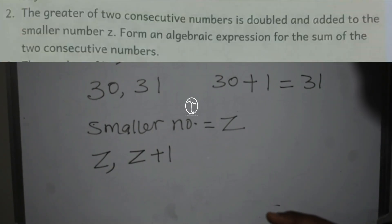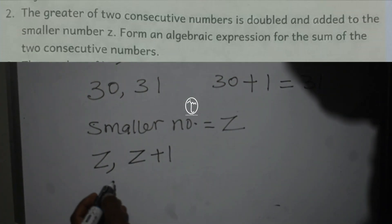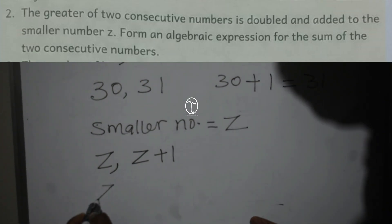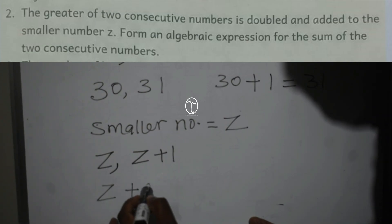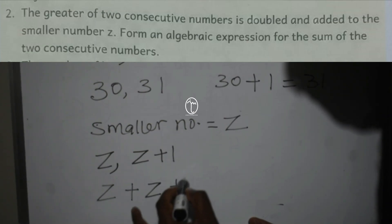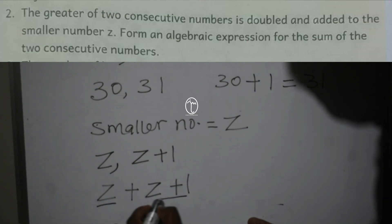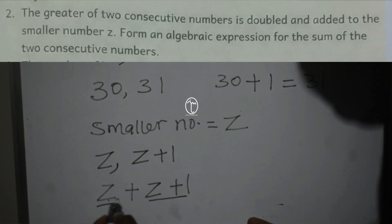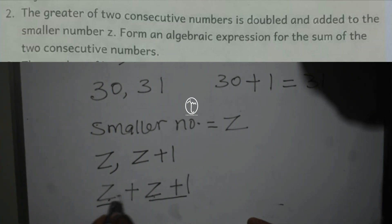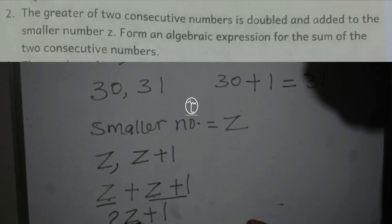Then the question says, form an algebraic expression for the sum of the two consecutive numbers. To get the sum, I get the smaller number Z and add the bigger number Z plus one. The like terms here are Z and Z. We put together Z with Z, and Z plus Z gives us two Z. So that is two Z plus one. We can't add the one with two Z because it's not a like term.